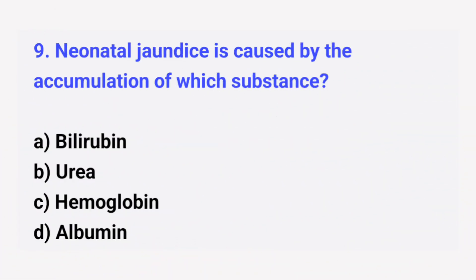Question number 9. Neonatal jaundice is caused by accumulation of which substance? The right answer is option A: Bilirubin.